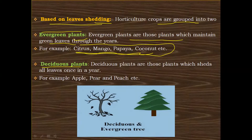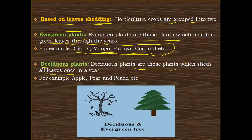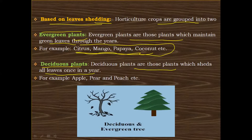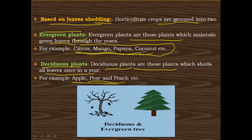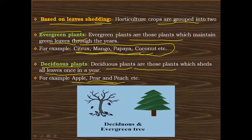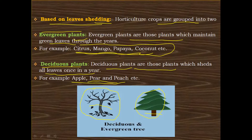The next class is deciduous plants. Deciduous plants are those plants which shed all their leaves once in a year. For example, apple, pear, and peach. This phenomenon can be easily seen in the season of autumn. You can see in the figure a deciduous plant which has shed all its leaves, compared to the evergreen plant which retains green leaves throughout the year.